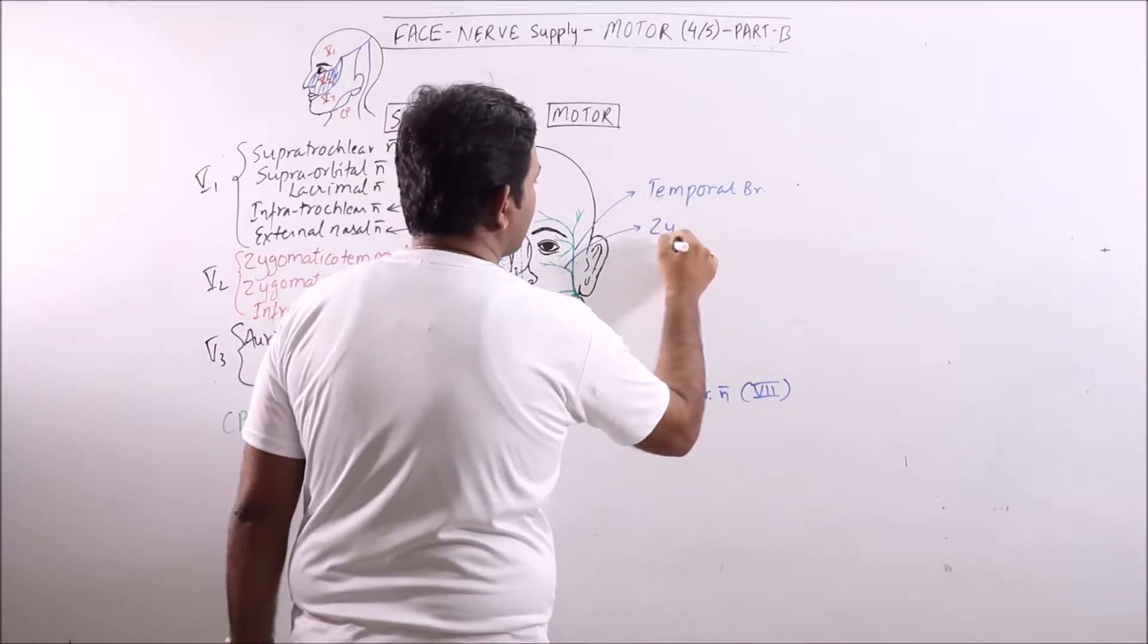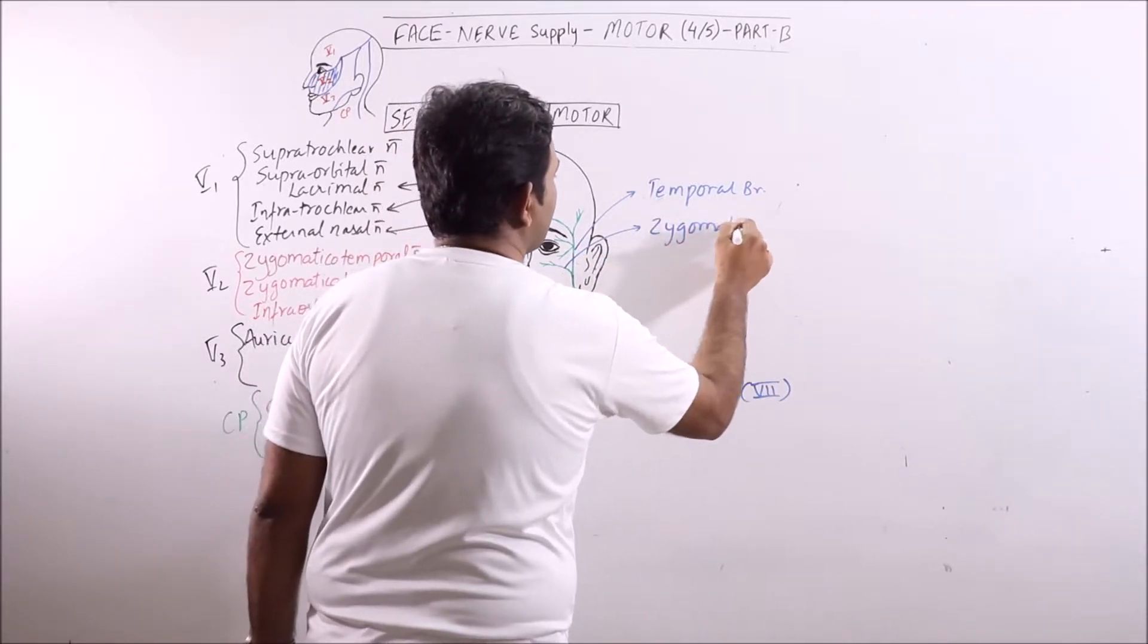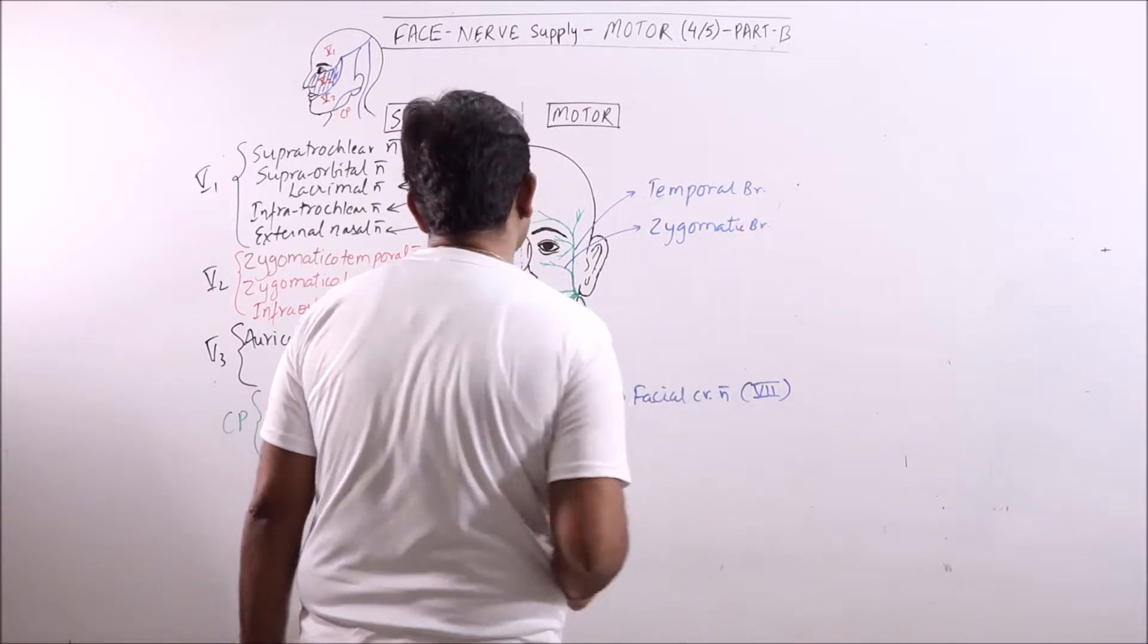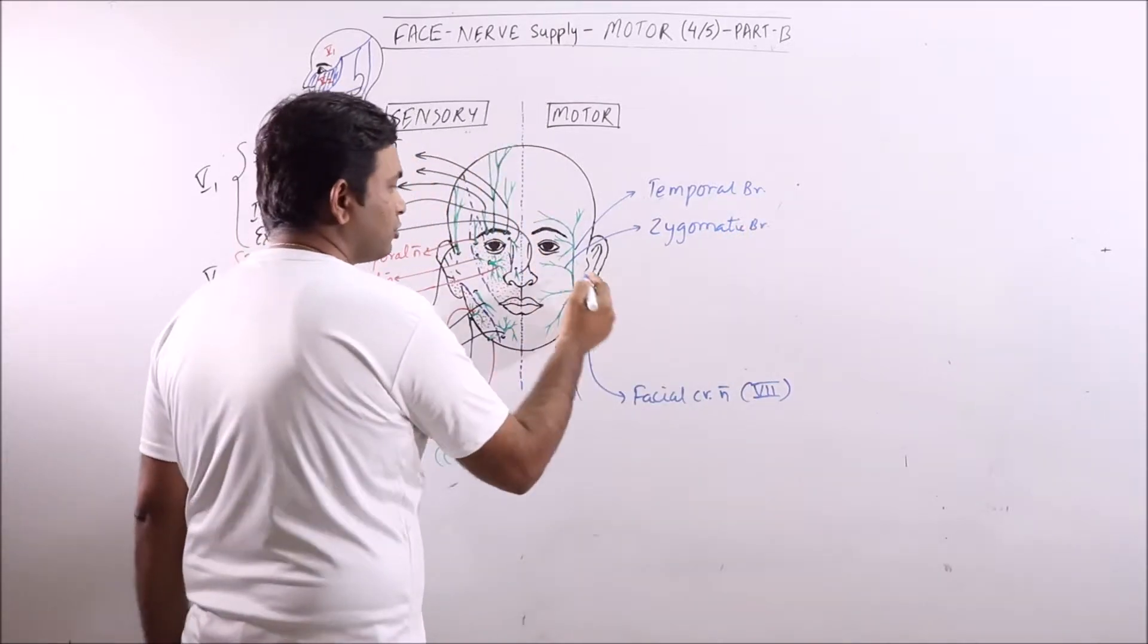This is the zygomatic branch. It supplies the orbicularis oculi muscle.